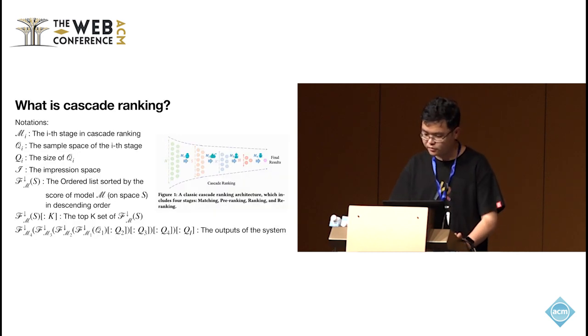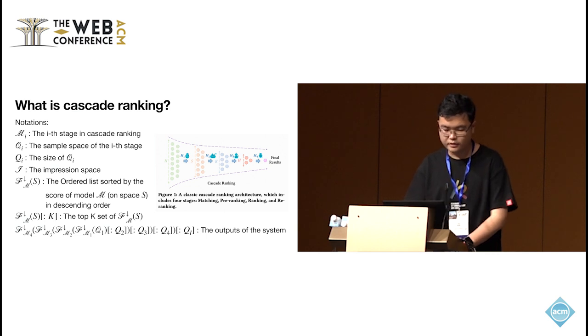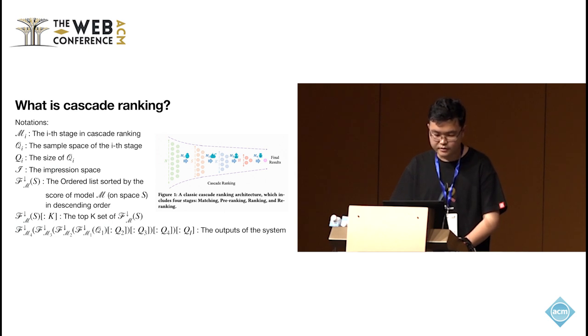First, let me introduce some important settings and notations of Cascade Ranking. For a Cascade Ranking System, when an online request arrives, the first stage M1 selects the aid from the entire inventory, and then the second stage M2 selects the aid based on the outputs of M1. This process continues until the last stage of the system decides the materials for Explorer. M1 denotes the S stage in Cascade Ranking. Q1 denotes the sample space of the S stage. F(M, O, S) denotes the ordered list sorted by the scale of model M on space S in descending order.